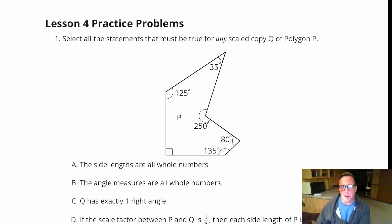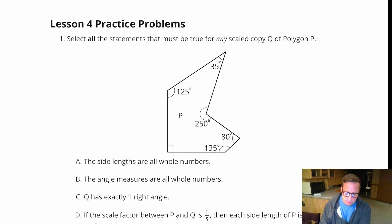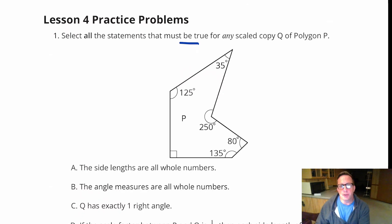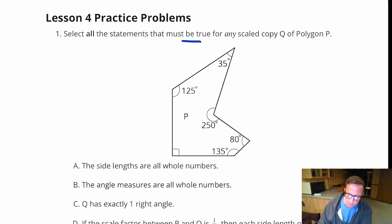Okay, for Lesson 4 Practice Problems, we've got to select all the statements that must be true for any scaled copy Q of polygon P. Now again, like previous practice problems, we don't have a Q. There's no picture of it.